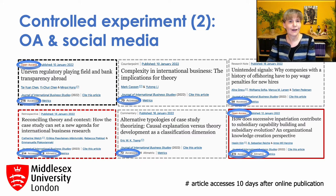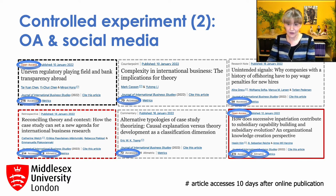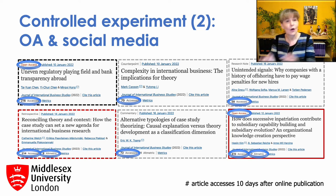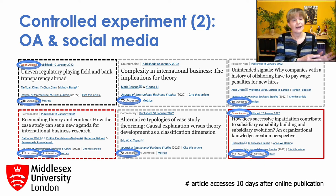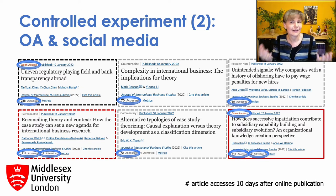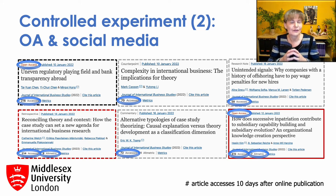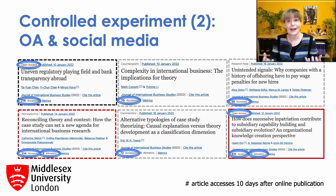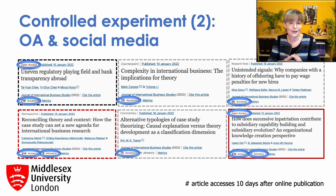Finally, there's the last article, which is my own article, which is both available in open access and has a significant altmetric score. It has an access count of more than 600 — three times as much as the articles that had either open access or social media sharing, and nearly ten times as much as those that had neither. As I mentioned before when I discussed open science, there can be a multiplier effect. If your article is available with open access and you engage in sharing on social media, the number of people accessing it might increase rapidly.